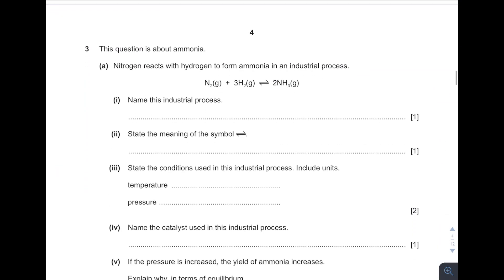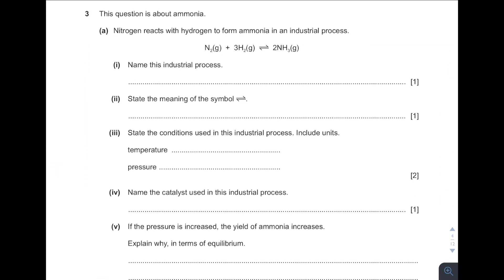Let's proceed to question 3, which is about ammonia. We are given this chemical equation. What is this industrial process? It is the reaction between nitrogen and hydrogen forming ammonia gas, and this reaction is what we call the Haber process. The symbol means reversible. Next, state the conditions used in this industrial process including units: temperature 450°C, pressure 200 atm, and the catalyst used is iron.